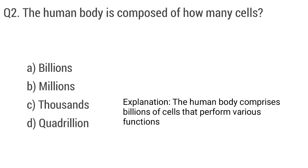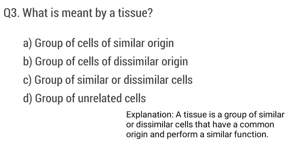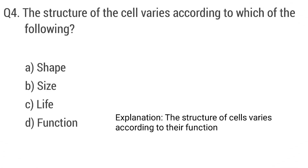The right answer is option A: billions. Question 3: What is meant by a tissue? The right answer is option C: a group of similar cells. Question 4: The structure of the cell varies according to which of the following? The right answer is option D: function.